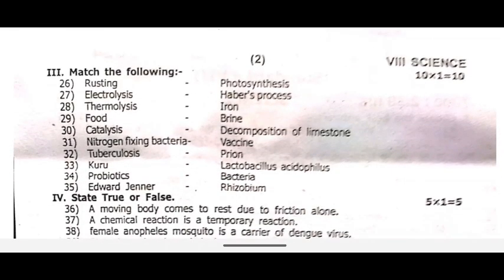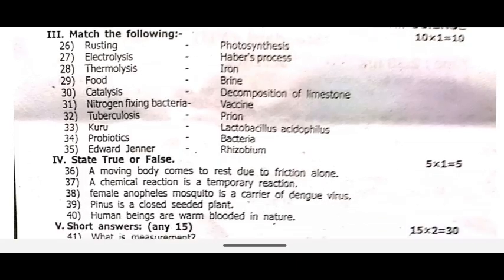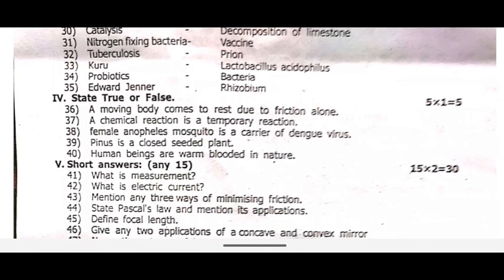Then, match the following. You can see the following. Twenty-six — rust, electrolysis, thermolysis, food, catalysts. You can see the following.